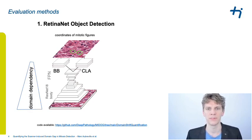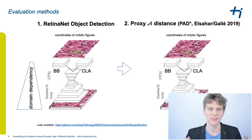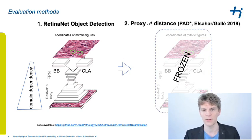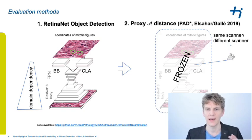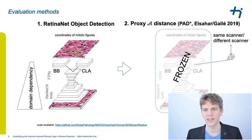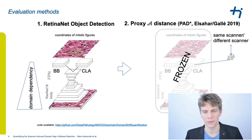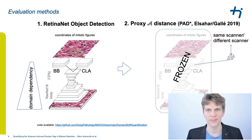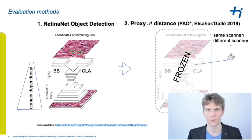This is why we also trialed a second method: the Proxy A Distance, or PAD*. The idea is to take the trained RetinaNet model, extract the last layer of the classifier just before classification, and add a small network whose task is to differentiate whether the input came from the scanner the model was trained on or from a different scanner. This so-called PAD* is a heuristic to measure how strongly domain-independent the features at the very last point in the network actually are.